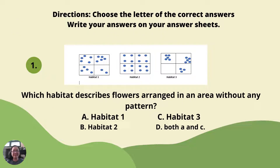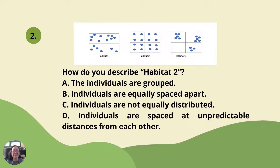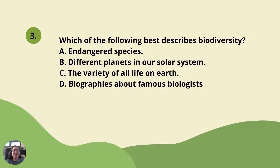Let's try the evaluation. Number 1: Which habitat describes flowers growing in an area without gaining water? A. Habitat 1, B. Habitat 2, C. Habitat 3, D. None. Number 2: How do you describe Habitat 2? A. The individuals are grouped. B. Individuals are equally spaced apart. C. Individuals are not equally distributed. D. Individuals are spaced at unpredictable distances from each other. Number 3: Which of the following best describes biodiversity? A. Endangered species. B. The different planets in our solar system. C. The variety of all life on Earth. D. Biographies about famous biologists.